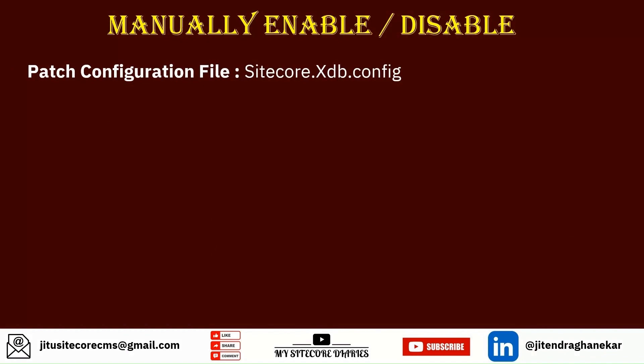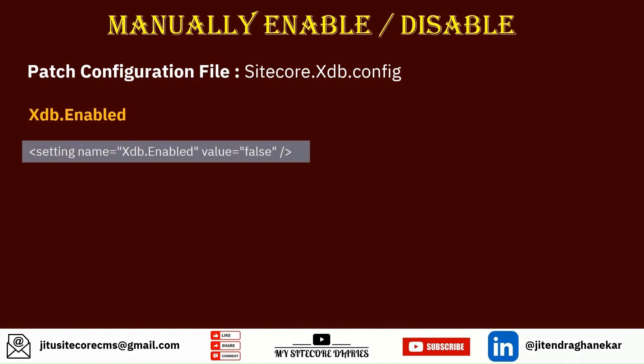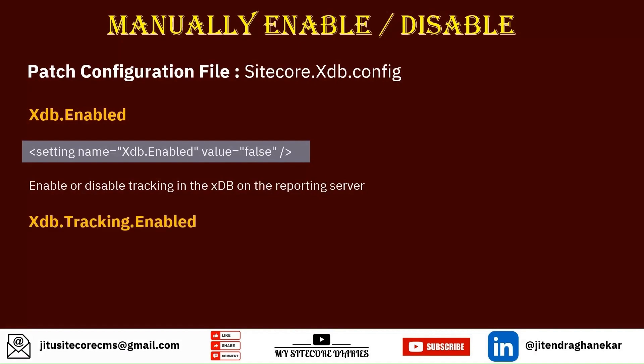There is a batch configuration file inside core xdb config. Here we have to update two properties. The first property is xdb.enable. You have to set the setting name xdb.enable to false — if it is false then xdb is not enabled. If you want to enable it, you just make it true. This enables or disables the xdb on the reporting server.